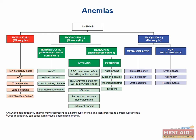There are many different types of anemia. One way to classify them is by looking at the mean corpuscular volume of red blood cells, which is a measure of their average size. This is easily done with a complete blood cell count, or CBC. We can classify anemias as microcytic with an MCV less than 80, normocytic with an MCV between 80 and 100, or macrocytic with an MCV greater than 100.